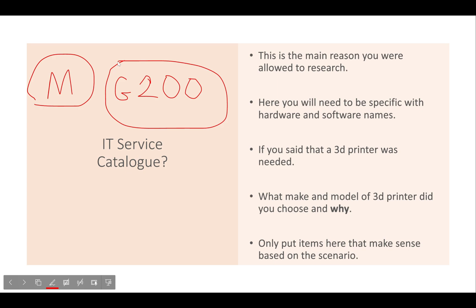Give at least the company that makes it and the model number, so if somebody else wants to find this item, they can type 'Motorola G200' into Google and find exactly what you're describing. If you said a 3D printer was needed, state the make and model and explain why you chose that specific one. The Motorola G200 has an amazing camera, 128GB of storage, and a 5000mAh battery that lasts two days easily. Only put items that make sense based on the scenario.